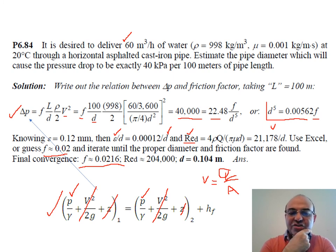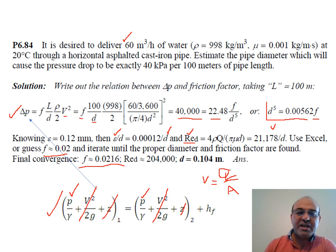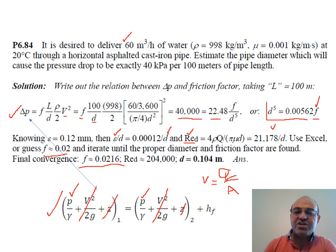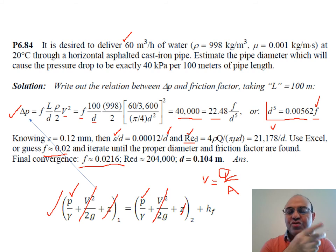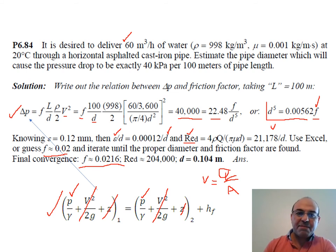In the exam, perform the iteration at least twice: make an initial guess for F, find D, recalculate Re and ε/D, get a corrected F, then find D again. Each iteration brings you closer to the correct answer. The more iterations, the more accurate the result. The procedure is straightforward once you practice with the Moody diagram.